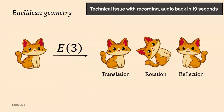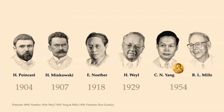Arguably the biggest impact of the Erlangen Program was in physics. At the beginning of the 20th century came the realization that you can derive the laws of physics from first principles. The most famous result is Noether's theorem, which showed you can derive conservation laws like conservation of energy from principles of symmetry. This was a remarkable result because previously these laws were mostly empirical — you would make experiments and observe that certain quantities are preserved.